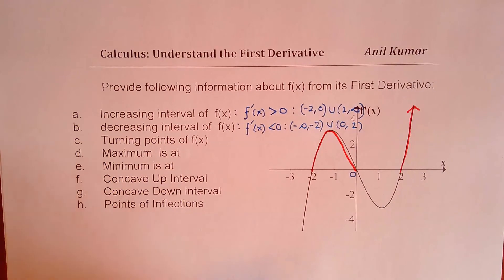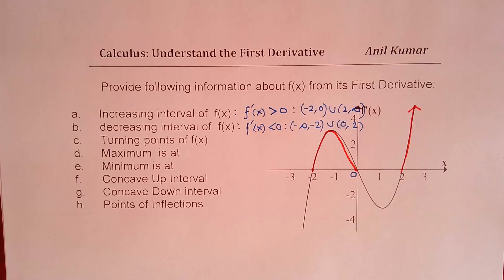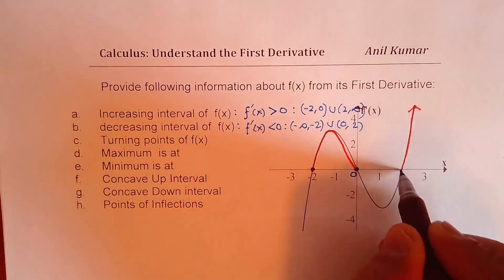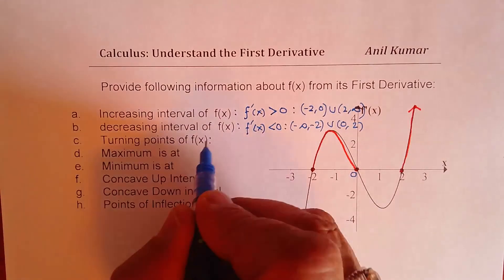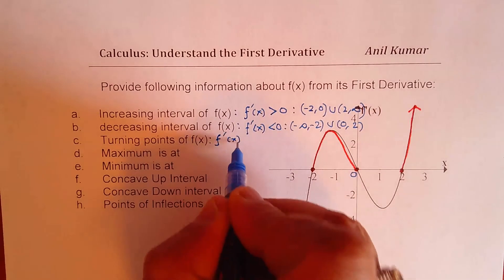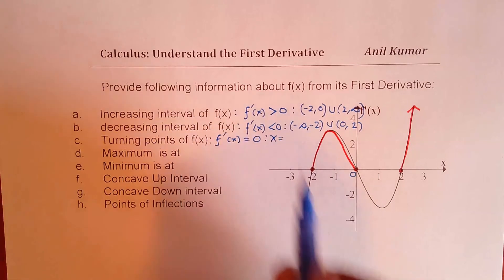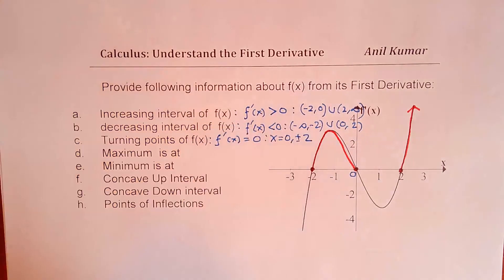So turning points — if you have a turning point on the function, the derivative should be 0. So these are the turning points of the function. You can figure out the turning points as where the first derivative equals 0, and these are at x equals plus or minus 2 and 0. So I hope till now there is no problem in understanding. That should fetch you 10 marks in your final exam. This question can be asked in different ways.